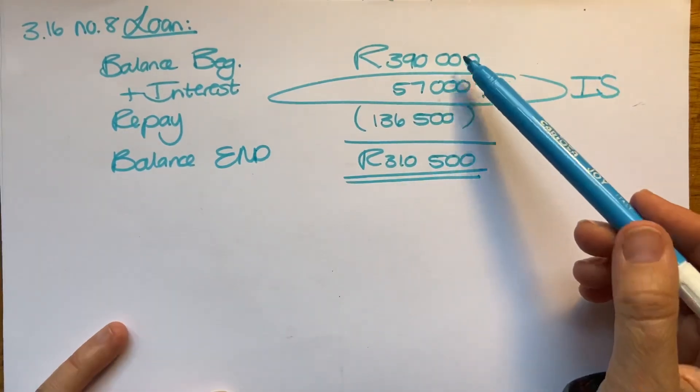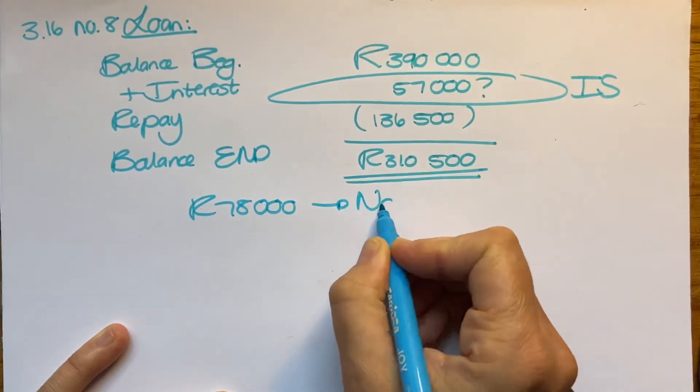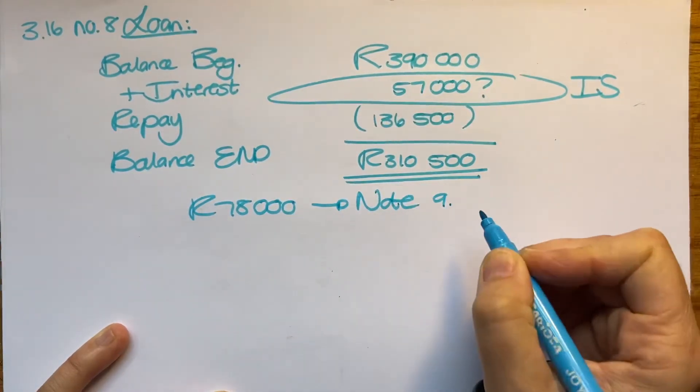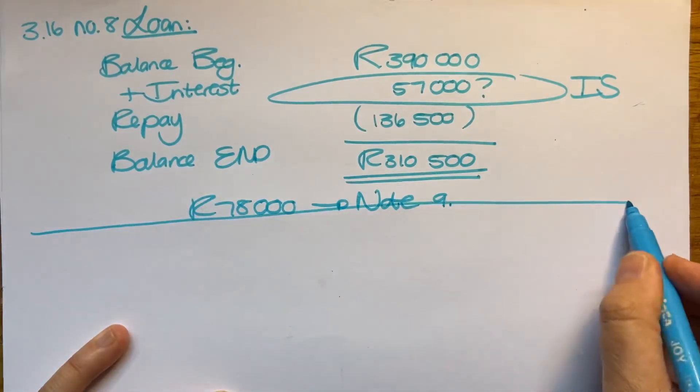Then you need to know that that other 78,000 is going to go under note number nine, and it's going to reflect as trade and other payables as a current portion of your loan. Okay, so I hope that makes sense. That's it.